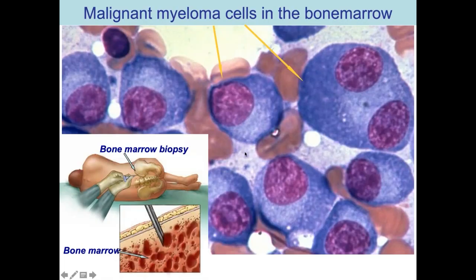When a bone marrow biopsy is taken, we look under the microscope. The blue-colored cells are the malignant plasma cells. They may look slightly different from one another, but this characteristic blue color identifies the multiple myeloma cells.